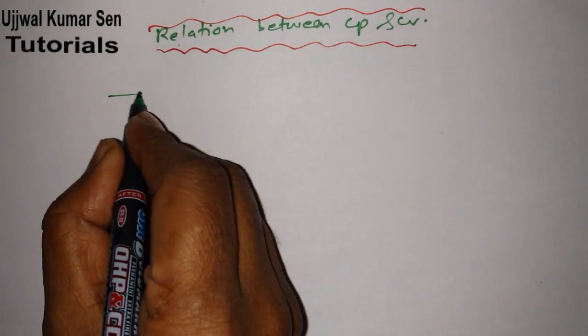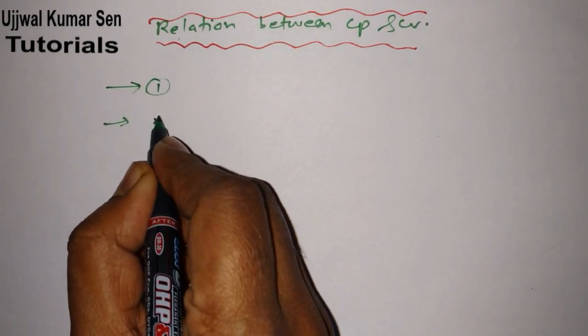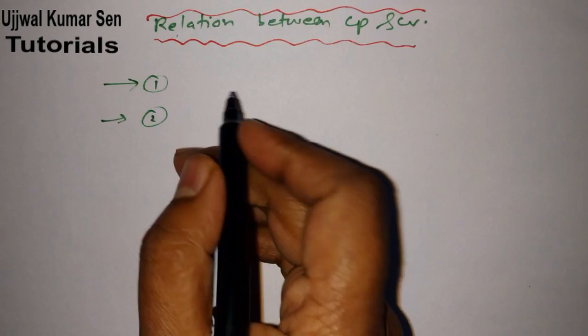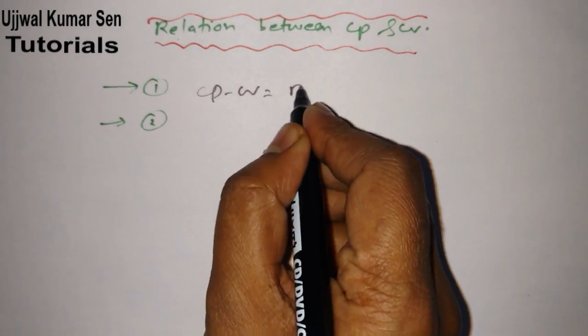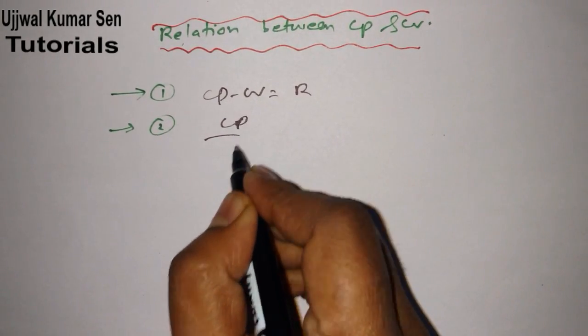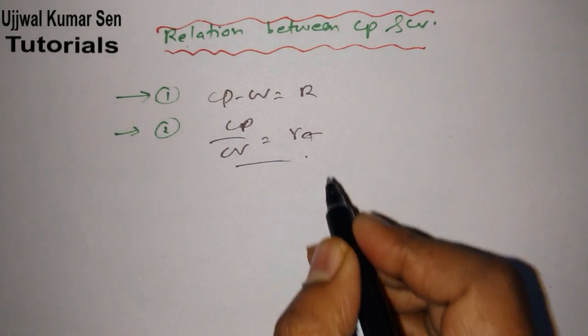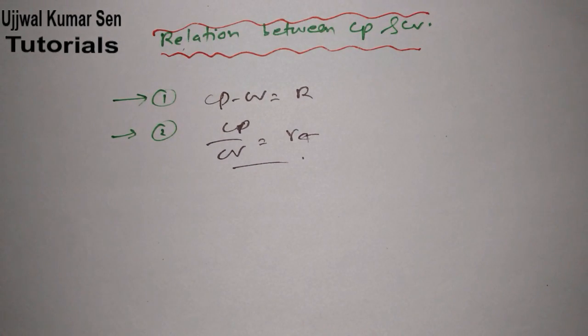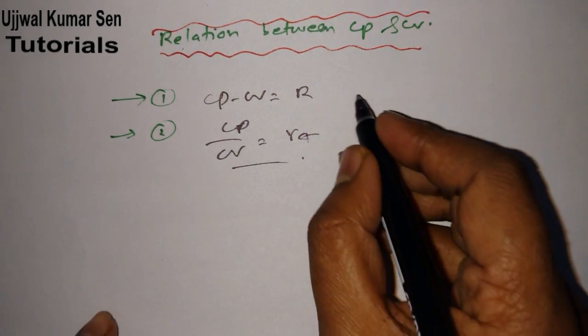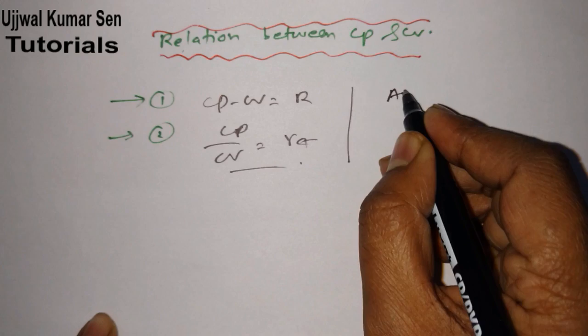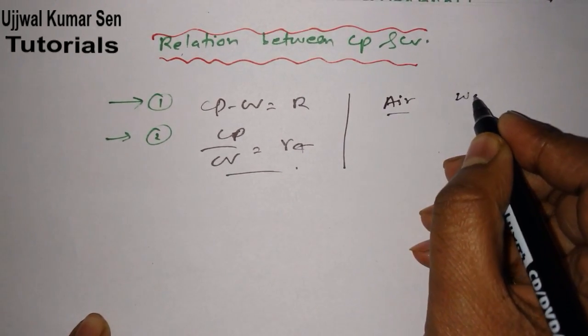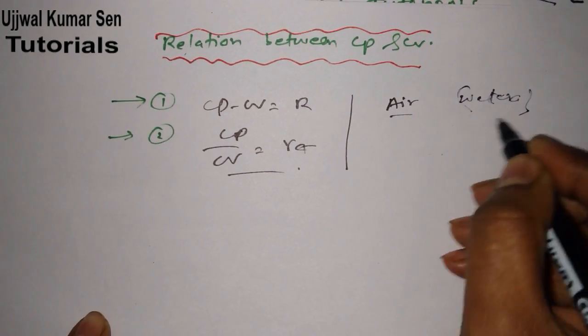There are two equations that we know very well. Let me share with you those equations: CP minus CV is equal to R. CP by CV is equal to gamma. What is gamma? Basically it's a specific heat ratio. And what is R? Ideal gas constant.